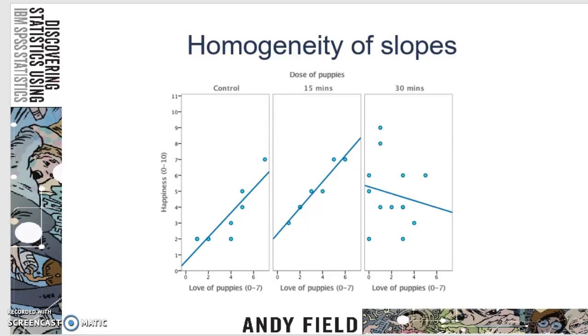In essence, you are controlling here for the love of puppies, and if you have homogeneity of regression of the slopes, then these slopes should all look the same.